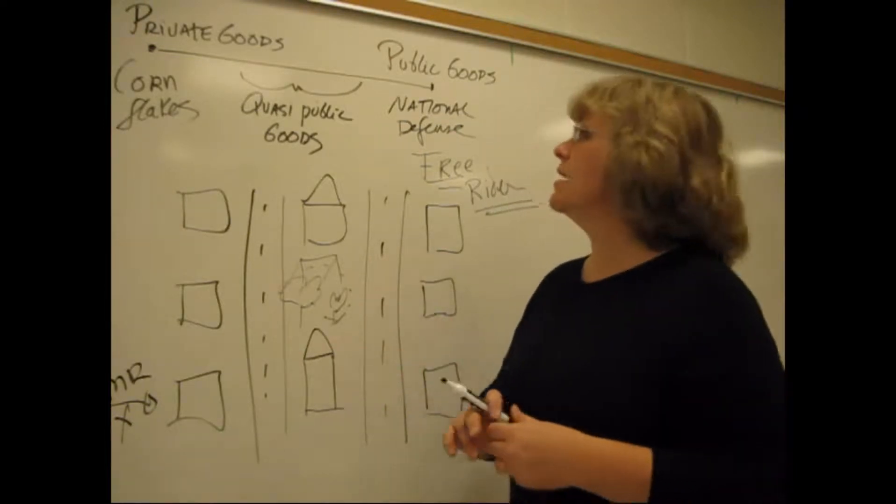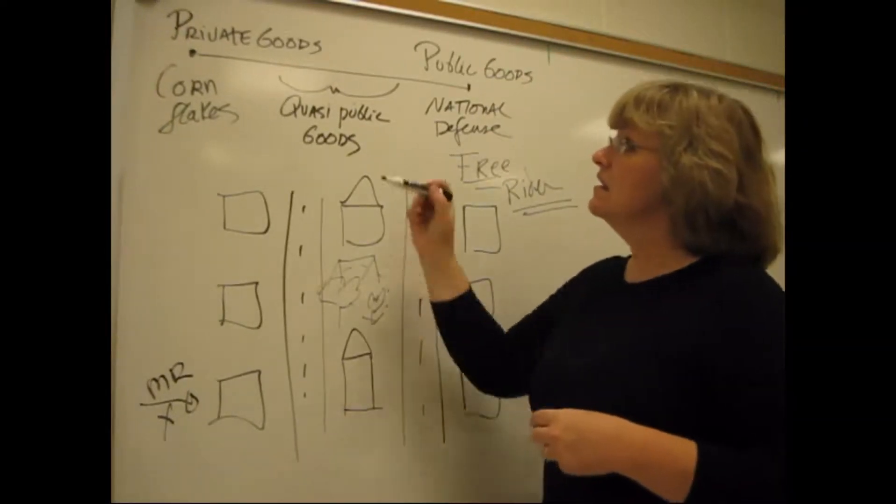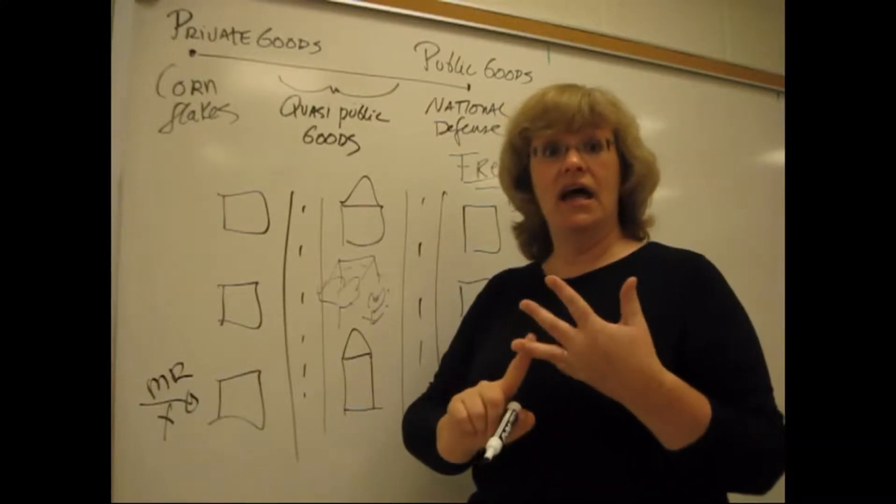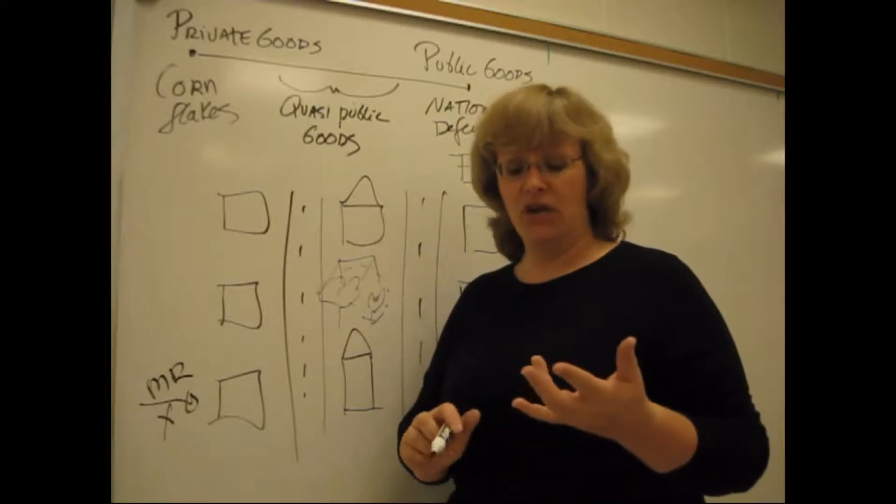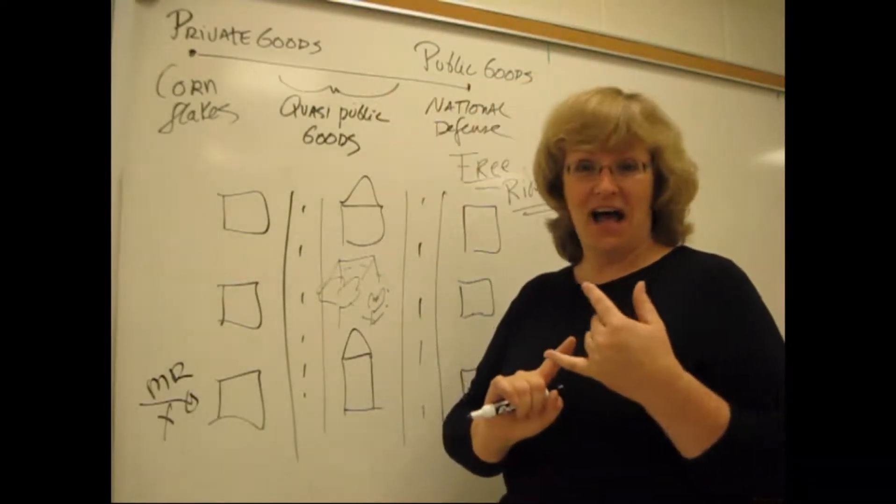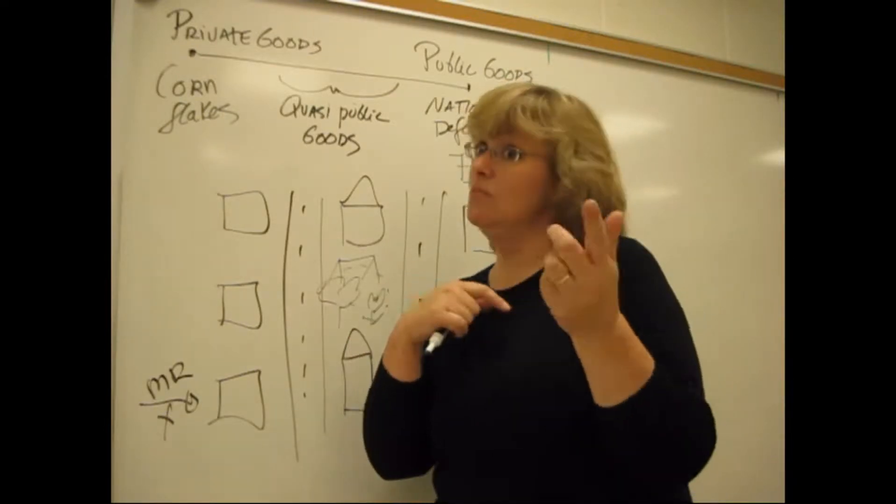Parks are a good example in my continuum up here of a public good, as are things like national defense. Private goods, by contrast, have rivalry of consumption and excludability. Cornflakes are the example I've got up here as a private good. I can exclude you from eating cornflakes if I buy them for myself and I can exclude you from all the benefits, and if I eat them you can't.